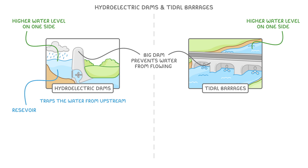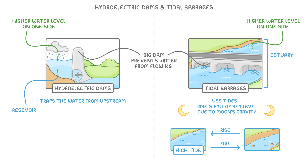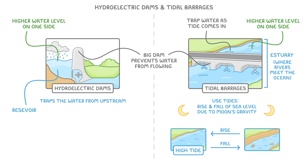For tidal barrages, we're making use of tides, which are the cyclic rise and fall of sea levels, due mainly to the effect of the moon's gravity. Twice each day, we get a high tide, which is where the level of water in the ocean rises. This also happens in estuaries, which are the points where the rivers meet the ocean. By placing tidal barrages, which are just big dams, in these estuaries, we can trap the water as the tide comes in, so that when the tide goes back out, we're left with a much higher water level on one side of the dam than the other.